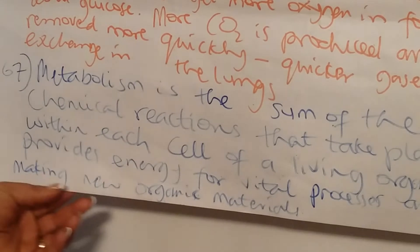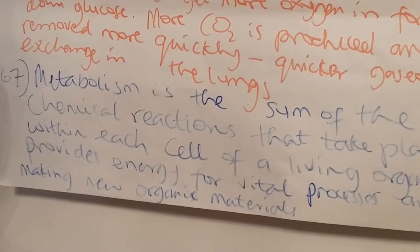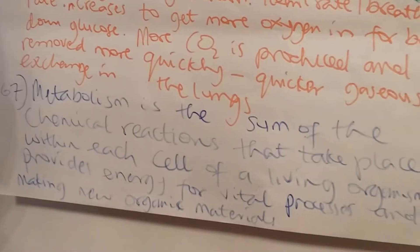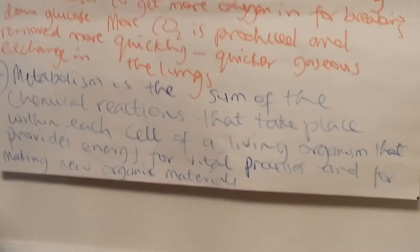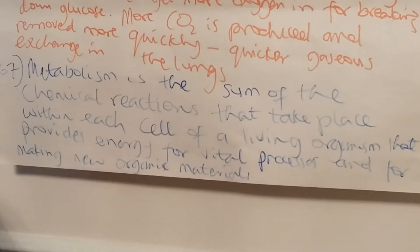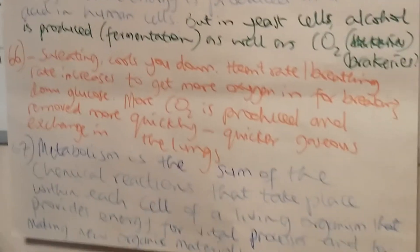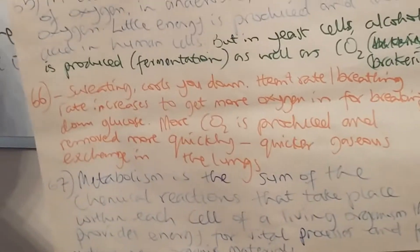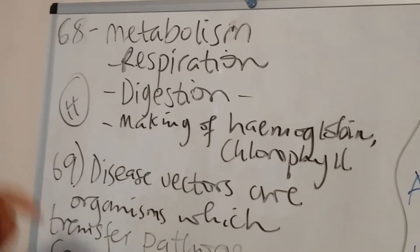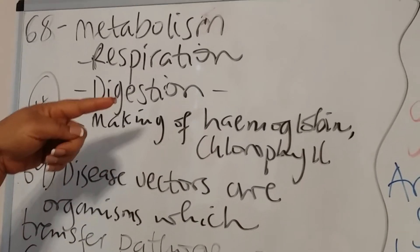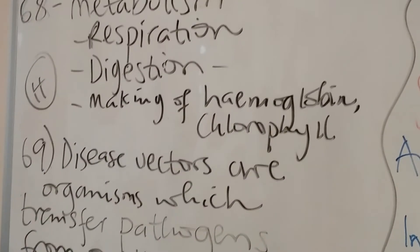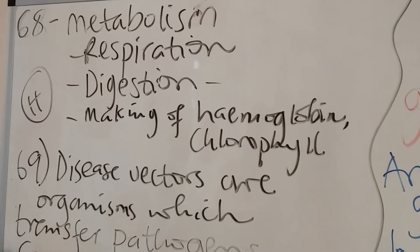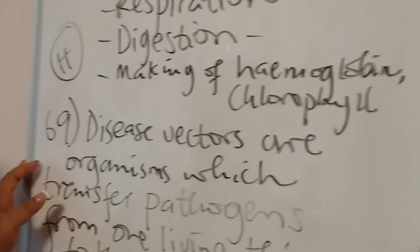Question 67 is about metabolism — this is for those doing the higher paper. Metabolism is the sum of the chemical reactions that take place within each cell of a living organism that provides energy for the vital processes and for making new organic materials. Question 68, also higher: forms of metabolism include respiration, digestion, and the making of haemoglobin and chlorophyll — these are all metabolic processes.